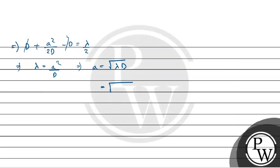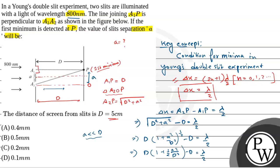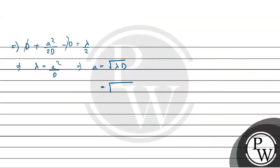Now, hum value put karenge. Now lambda kya given hai? That is 800 nanometers and d is 5 centimeter. So lambda is 800 nanometers that is into 10 to the minus 9 meter and d is 5 centimeter so that is 5 into 10 to the bar minus 2 meter. So lambda ka value hum put karenge 800 into 10 to the bar minus 9 into 5 into 10 to the bar minus 2. So this is equals to 2 into 10 to the power minus 4 meter jo ki hum likh sakte hain ki this is equals to 0.2 millimeter.